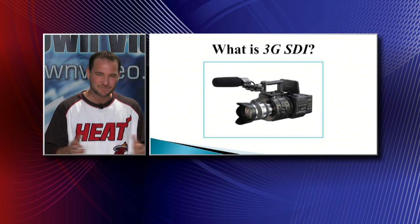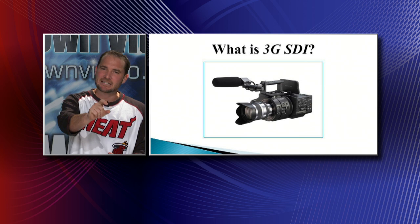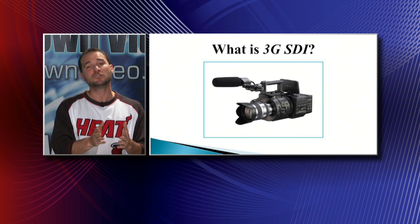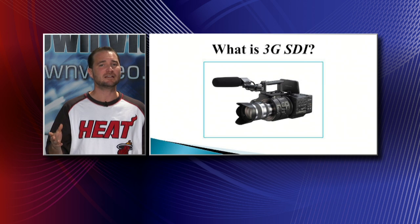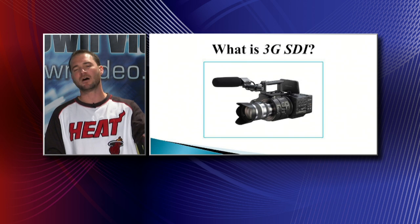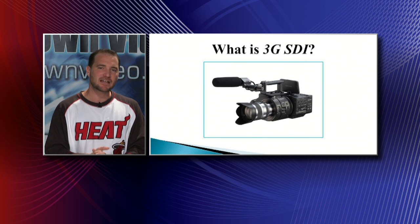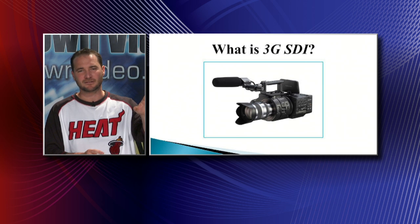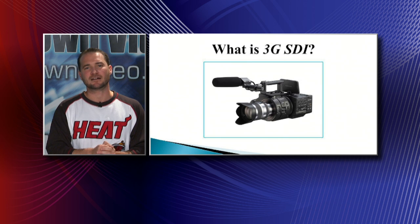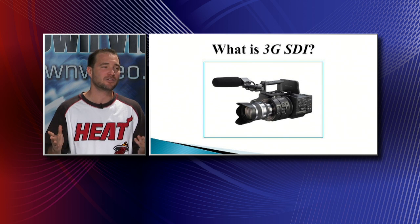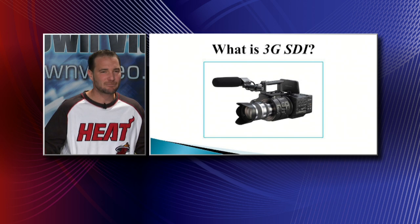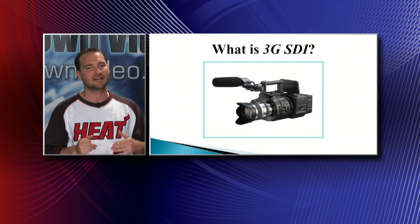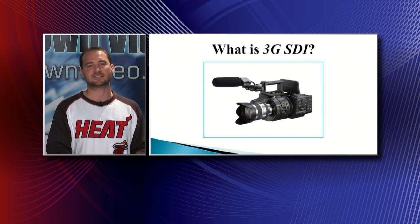What is 3G SDI? SDI stands for Serial Digital Interface — that BNC locking connection that looks just like a composite cable. Composite is analog standard-definition; SDI is digital. HD SDI carries 1920x1080 at a data rate of 1.5 gigabits per second. 3G SDI looks identical but doubles that data rate, so it's almost like carrying two SDI signals on one connection. If you want to carry 4K on a single cable, it has to be a 3G SDI output.